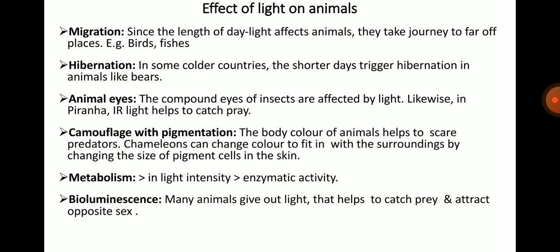Light influences pigmentation in animals. Cave animals lack skin pigments. Darkly pigmented skins of human inhabitants of the tropics also indicate the effect of light on skin pigmentation. The role of pigmentation and protective coloration in terrestrial animals is induced by light. Some animals develop different types of pigmentation under the influence of light during breeding season. The body color of animals helps to scare predators. Chameleons can change color to fit in with their surroundings by changing the size of pigment cells in the skin.